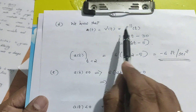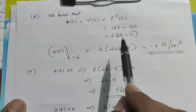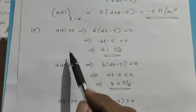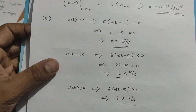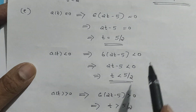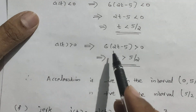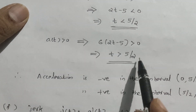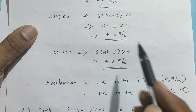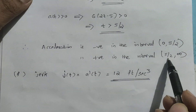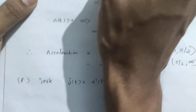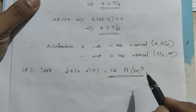Now, the acceleration a(t) equals v'(t), which is the second derivative of position. Differentiating v(t) = 6(2t - 5) gives a(t) = 12t - 30. The acceleration at t equal to 2 can be found by substituting t = 2, giving a value. The derivative of the acceleration is 12 feet per second cubed.